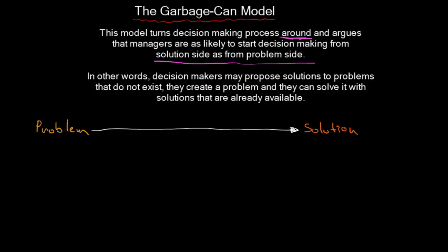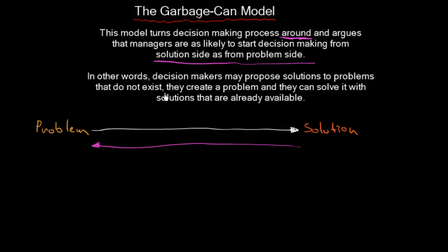The garbage can model says there is also the other way around — we can start from the solution side and get to the problem side. In other words, decision-makers may propose solutions to problems that do not exist; they create a problem and solve it with solutions that are already available.